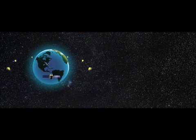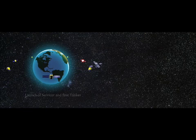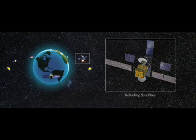Once launched, the SIS servicer vehicle will rendezvous with a customer spacecraft and refuel it. The SIS servicer will subsequently travel around the geo-orbit to reach other customer spacecraft to refuel or service them.